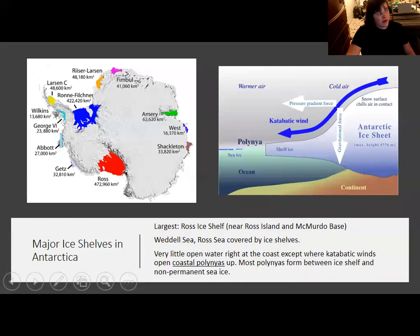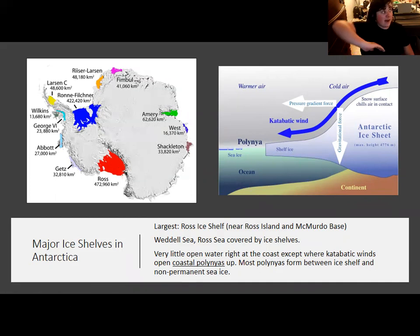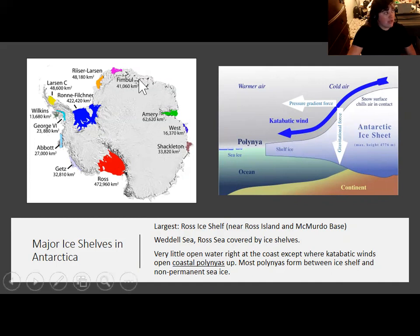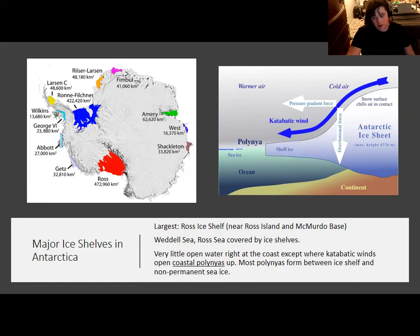Large ice shelves in Antarctica cover most of the bays or inlets around the Antarctic coast. The largest is the Ross ice shelf, which surrounds Ross Island where Mount Erebus and the US McMurdo base are located. The only open water at the coast is usually where katabatic winds — already fast due to the dome shape of the ice sheet — are driven even faster as they sink down the sloping coast. They push sea ice away from the ice sheet, creating areas of open water that initiate Antarctic bottom water formation. These are the coastal polynias that form between the ice shelf and non-permanent sea ice where katabatic winds push the sea ice away.